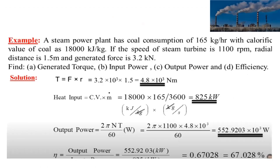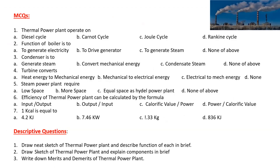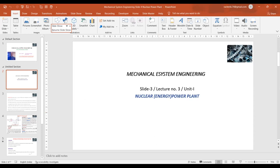We solved two simple examples based on that efficiency formula — very simple questions that you should not miss, as they are worth four marks and can be solved within five minutes. We also covered MCQs and descriptive questions for exam preparation. Now we are going to start with lecture number 3, which is slide number 3 of Mechanical System Engineering — that is the nuclear power plant.